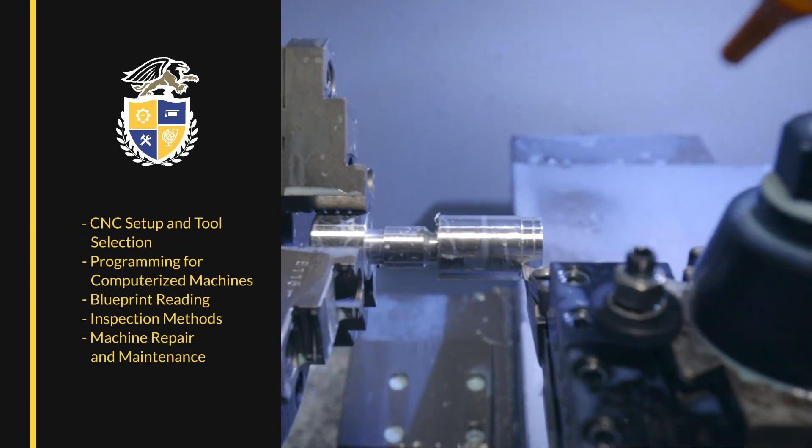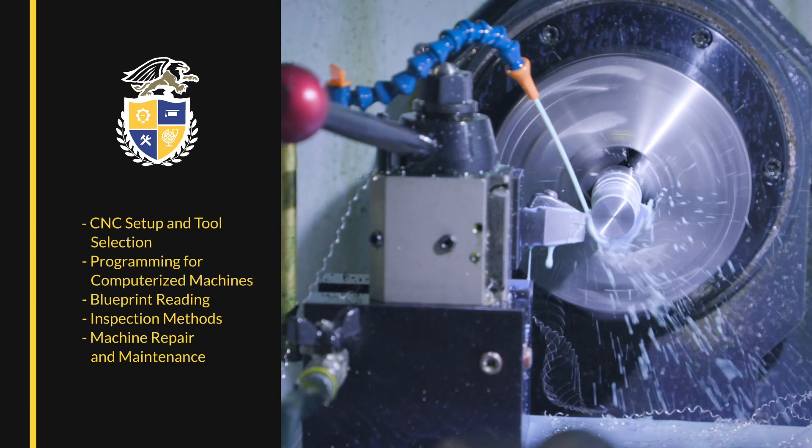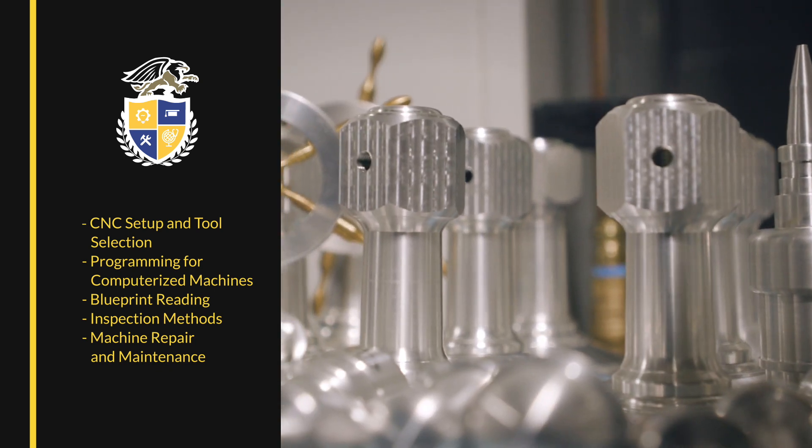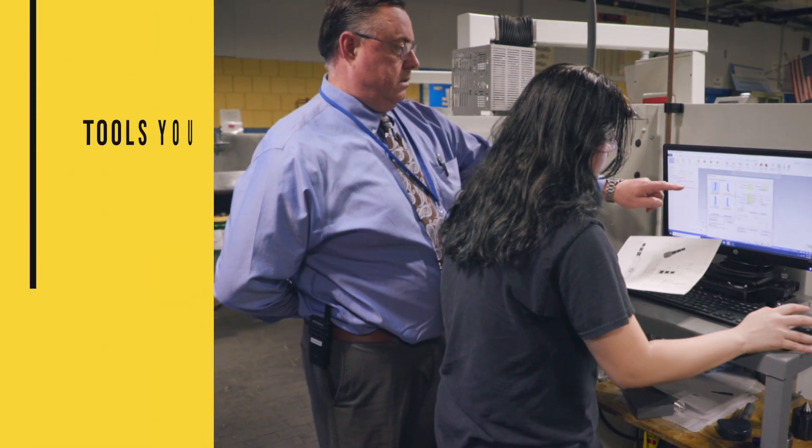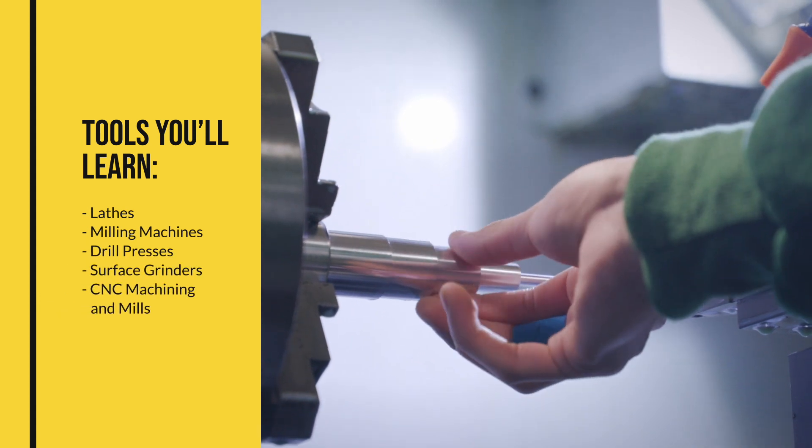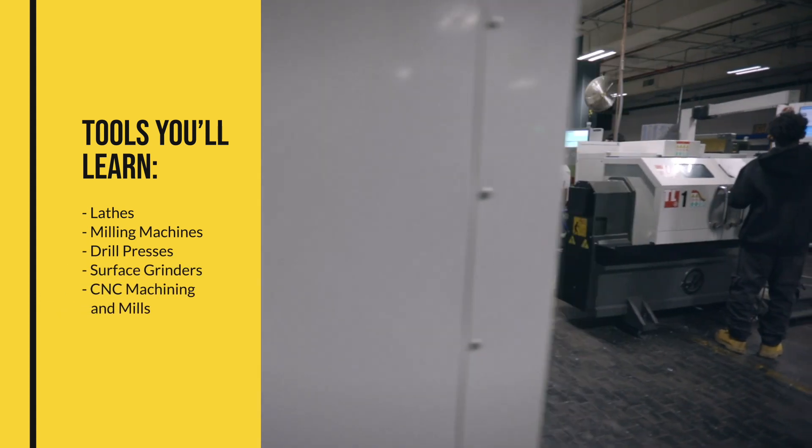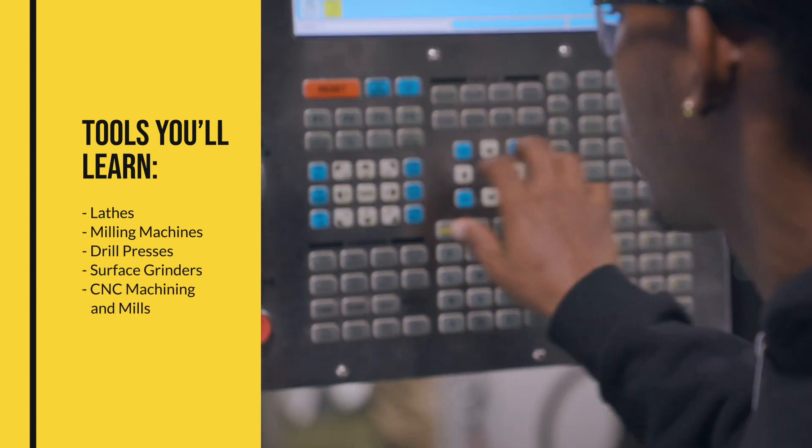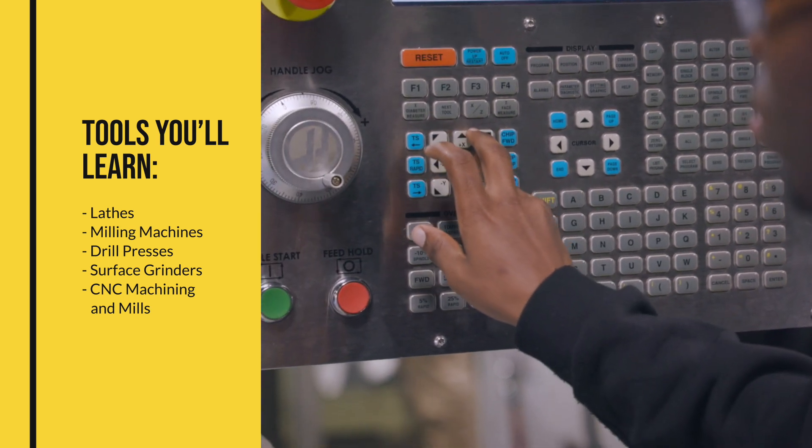You'll learn to make precision components from a variety of metals, for example, billet aluminum, brass, and plastics, using lathes, milling machines, drill presses, and surface grinders, as well as computer numeric control, or CNC equipment.